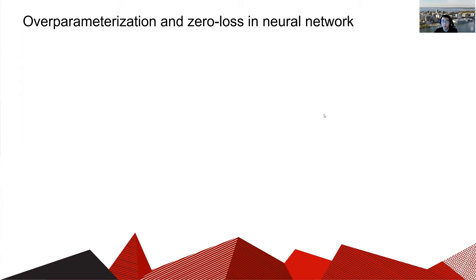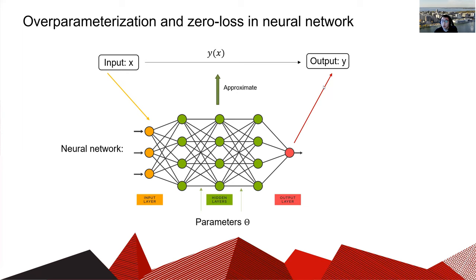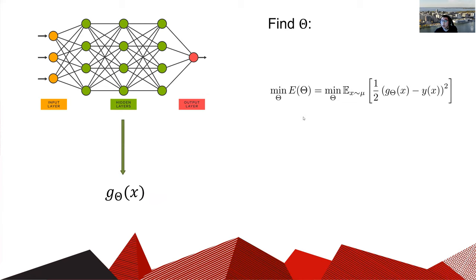I will quickly go through over-parameterization in neural networks. We view the neural network as a tool to approximate a target function y(x), where x is the input and y is the output, and the neural network is tuned by changing the parameter theta. We define the function generated by the neural network as g_theta(x). To find the best theta, we define the loss function E(theta) as the L2 squared loss, where y(x) is the target function and mu is the distribution of the input. Here mu can be the real distribution or a summation of delta functions generated by the dataset.